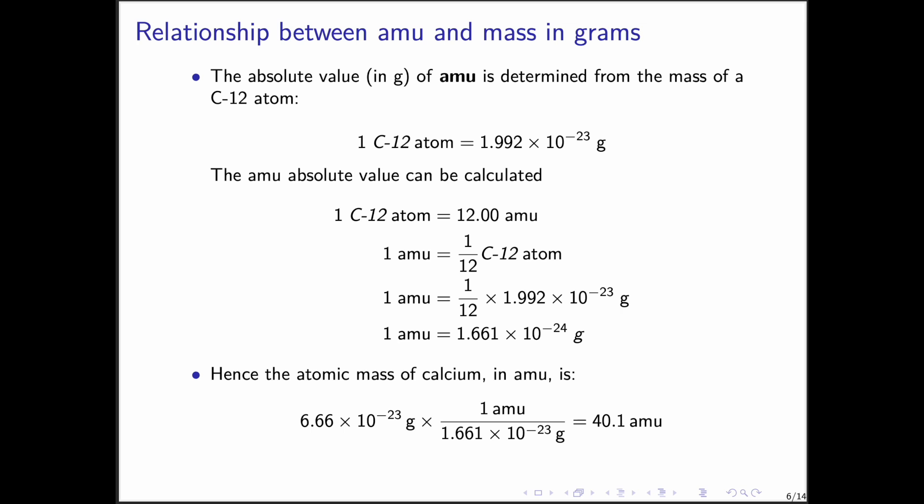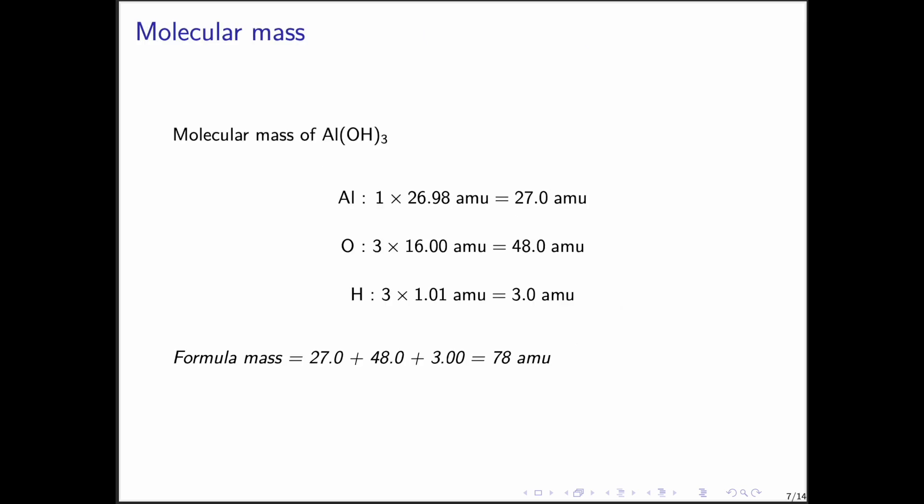Next, let's look at the mass of molecules. The molecular mass is the sum of the atomic masses of all the atoms in a molecule. For example, in aluminum hydroxide, aluminum contributes 27 atomic mass units, oxygen contributes 48 atomic mass units, and hydrogen contributes 3 atomic mass units. That gives a total molecular mass of about 78 atomic mass units.